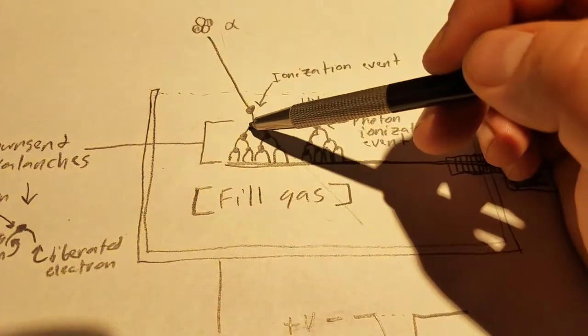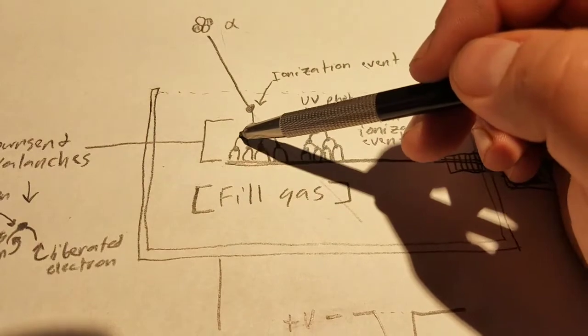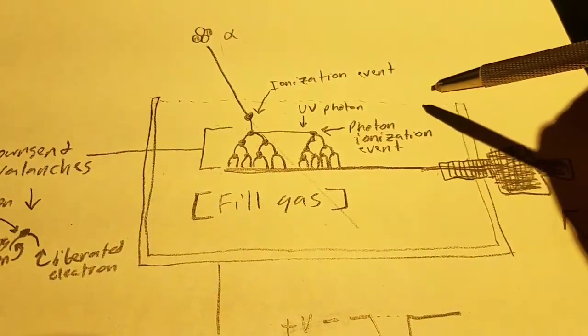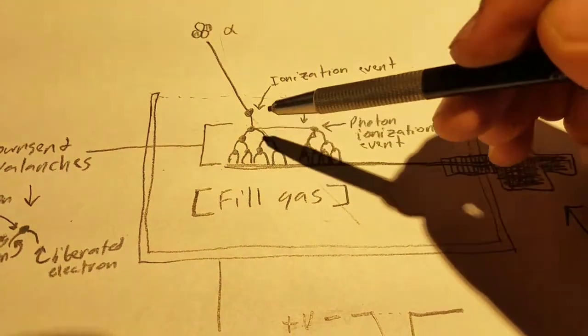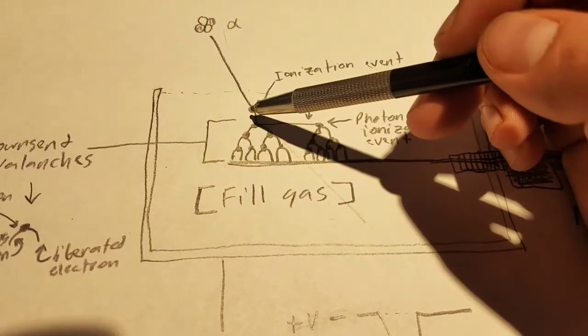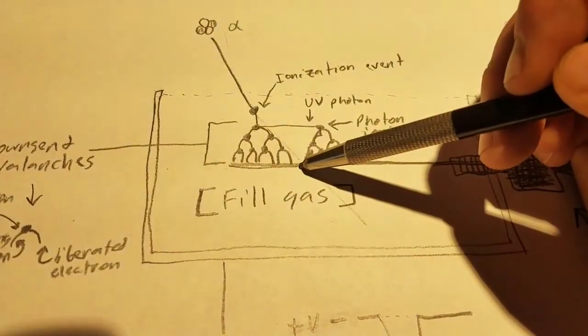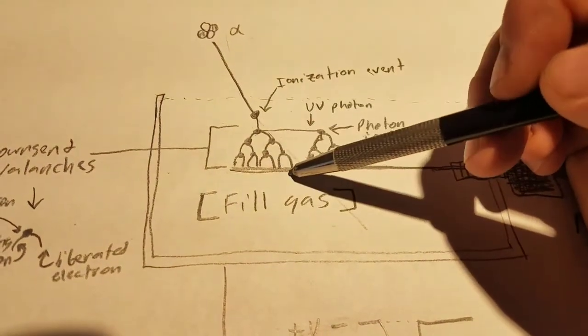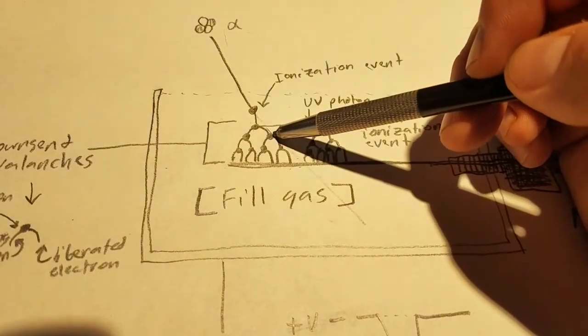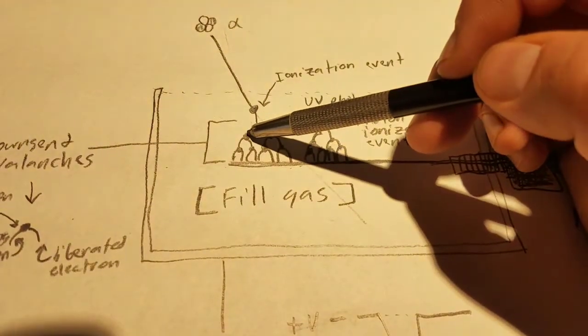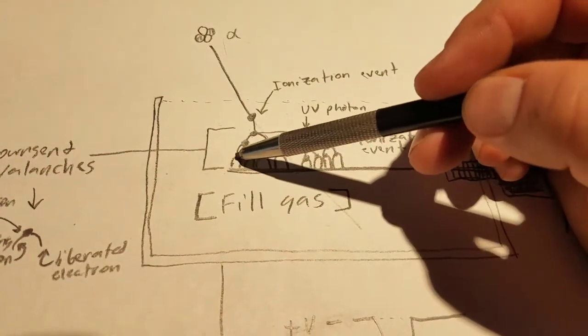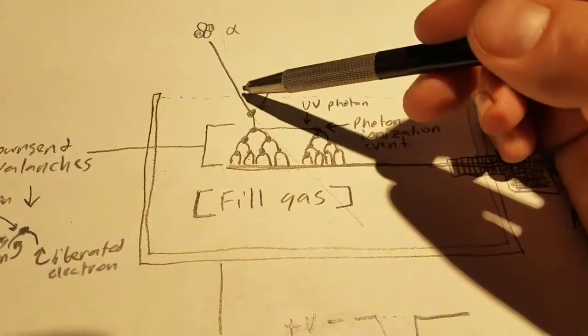It causes electrons to split off, and because there's a 900 volt potential between this and the casing, it'll actually cause the electrons to accelerate towards the anode because it has a positive charge and electrons have a negative charge. While that's happening, the ions created strike other atoms in here and break off additional electrons, causing several other ionization events.